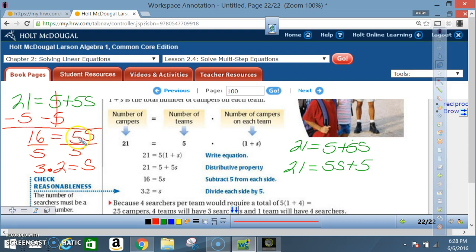On this side I have 21 minus 5, so that's going to give me 16. So now I have 16 equals 5 times s. I want to get the s by itself. I'm working with multiplication, so I'm going to divide both sides by 5. After dividing, 5 divided by 5 is 1, so that cancels out and I have s equals 16 divided by 5, which is 3.2.